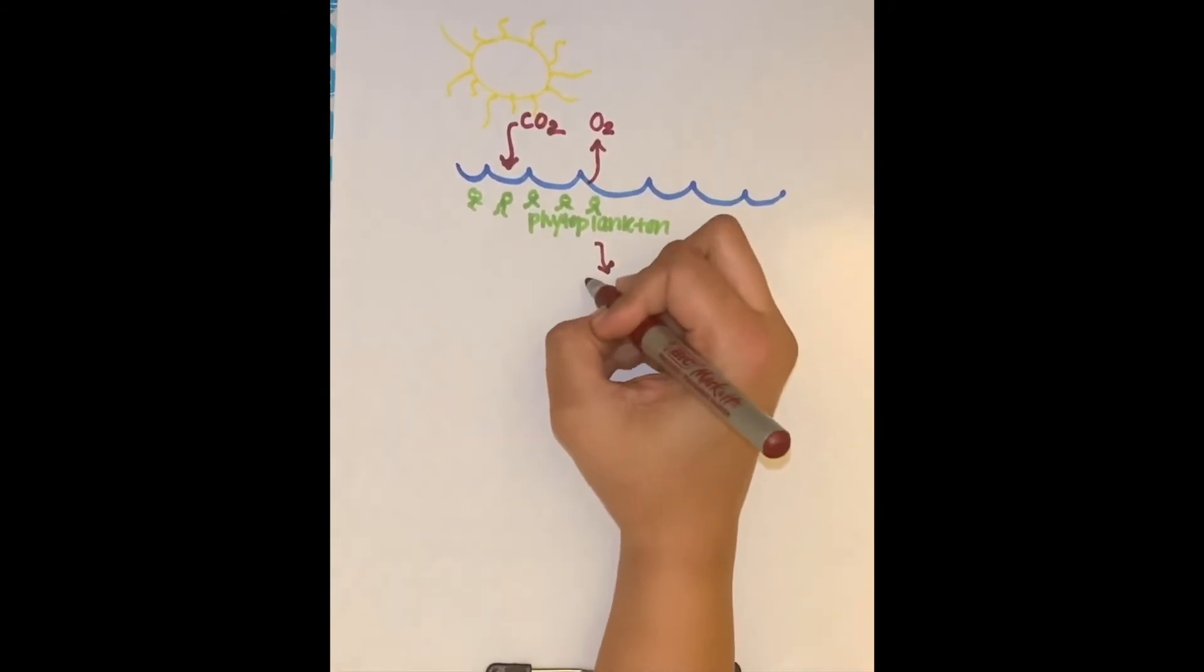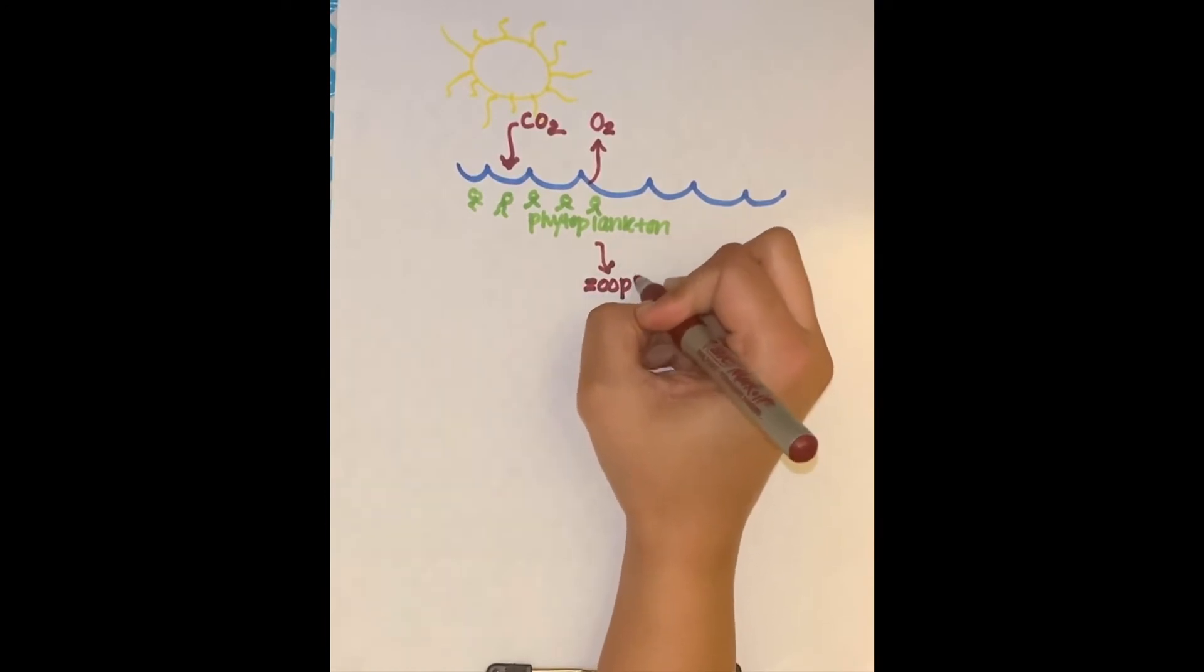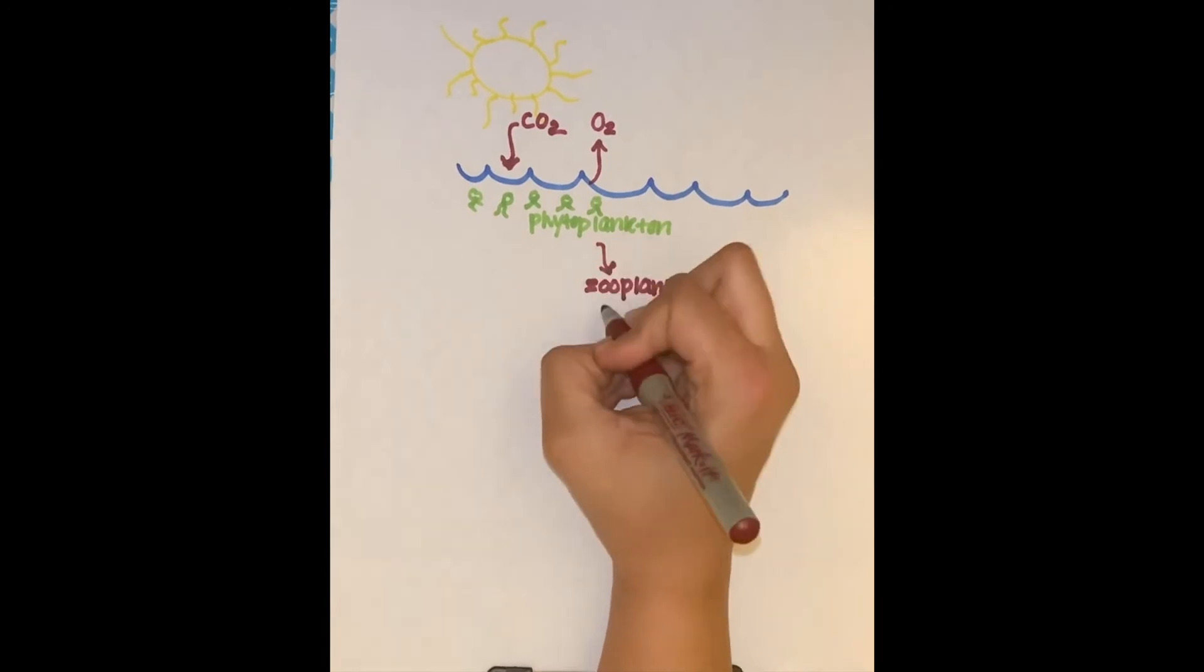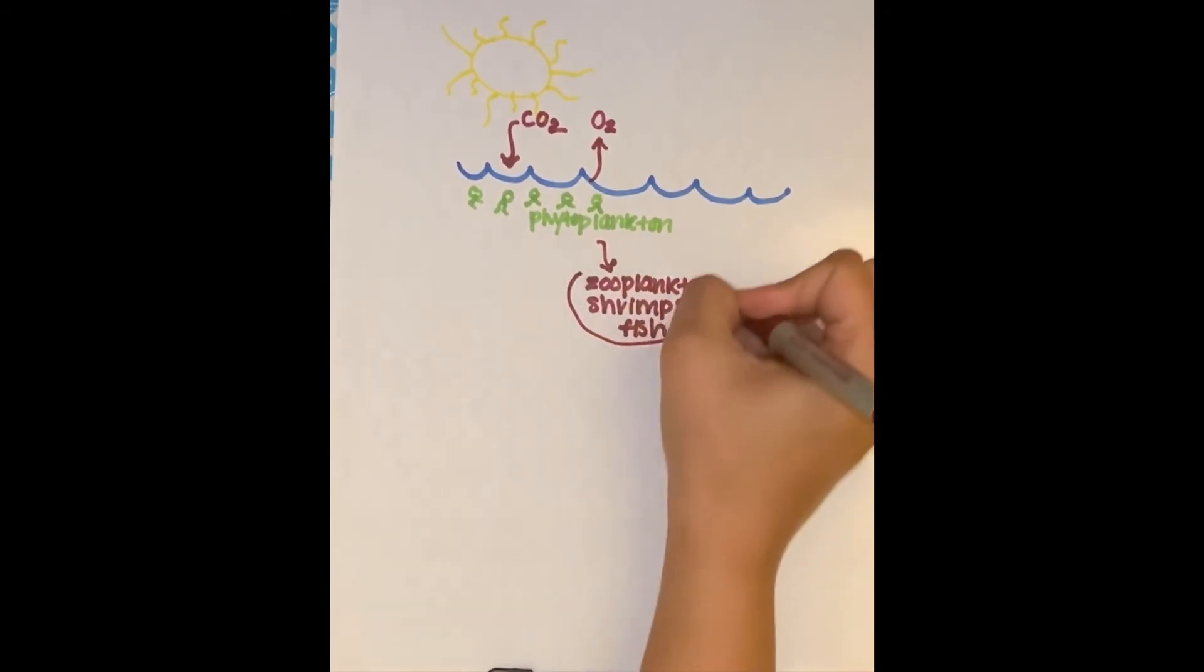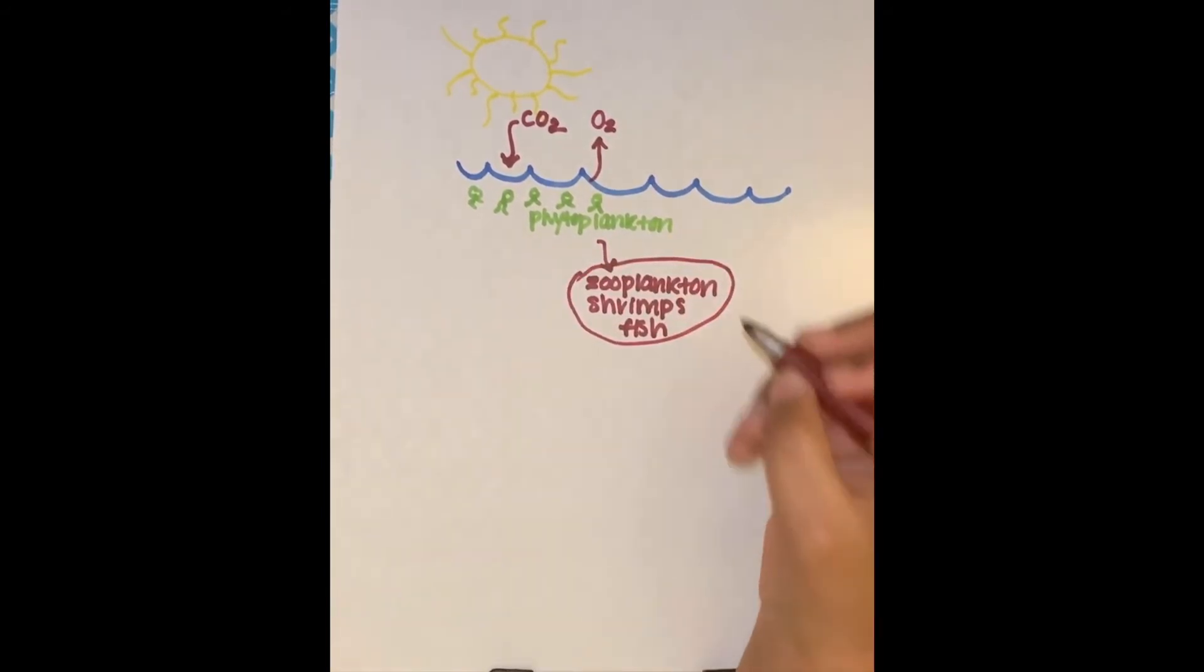Phytoplankton are the food source for organisms such as zooplankton. Larger organisms like shrimp eat the zooplankton, and even larger organisms such as fish eat the shrimp.